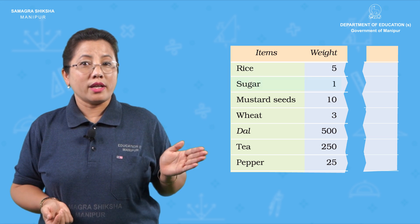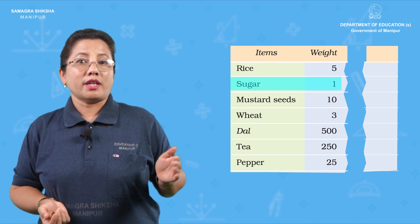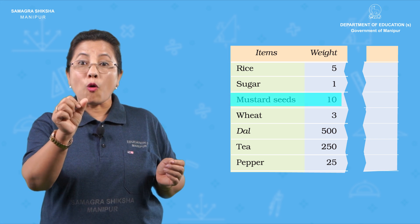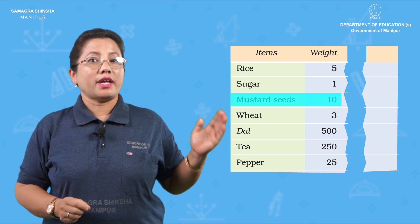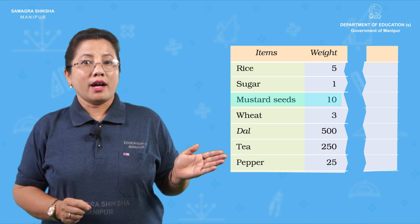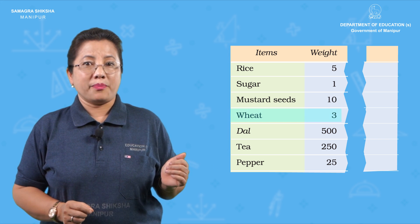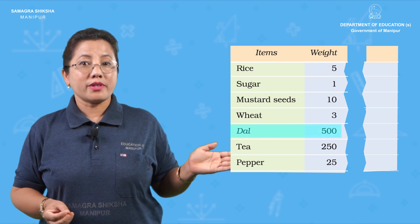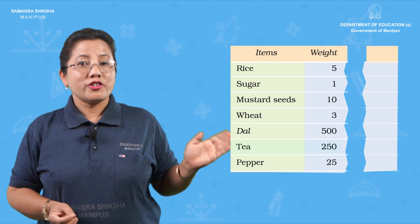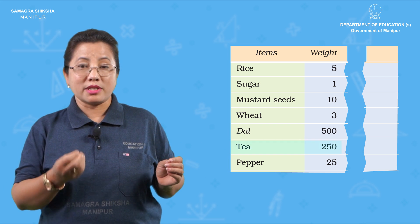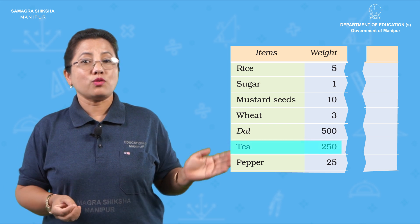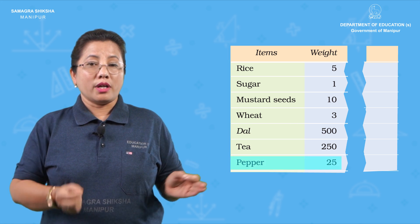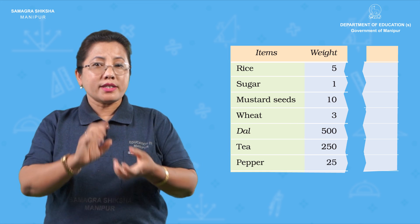Sugar — one. Then moss or sweet. Wheat — three. Doll. How is that? 500g, 50, 250g were 500g. Piper, gulmaru, 25g.